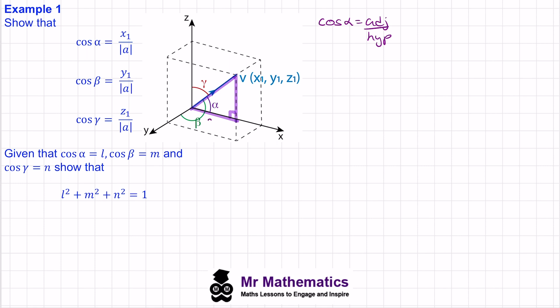The x-component we'll call x1 and the hypotenuse will be the magnitude of V. So cos alpha, which equals L, is the adjacent x1 over the magnitude of V.